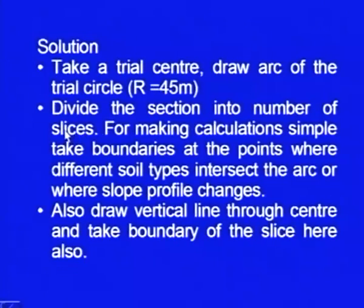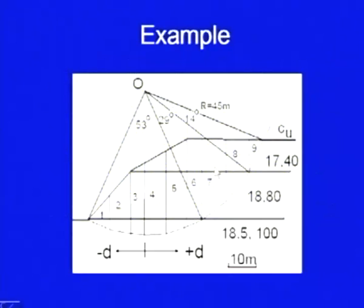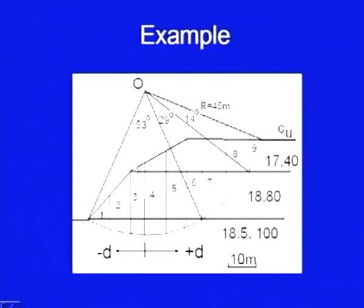So the solution: take a trial circle, draw the arc of the trial circle — we have measured it; it is 45 meters. Divide the section into a number of slices. For making calculations simple, take boundaries at the points where different soil types intersect the arc or where the slope profile changes — these should be taken as boundaries. This is what I had discussed: you should try to keep the boundaries of the slices at these places. Because in this particular example the profile is changing — here the angle is almost 45° and here it is a flatter angle — we should also keep one slice ending at that particular place.